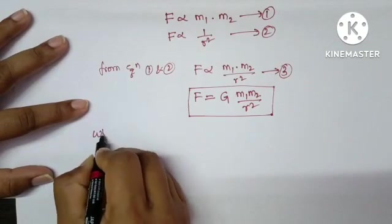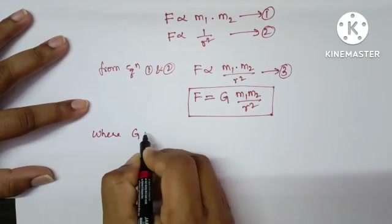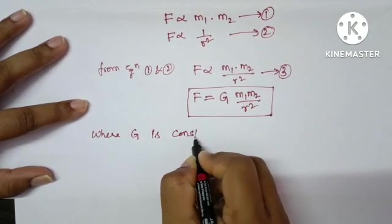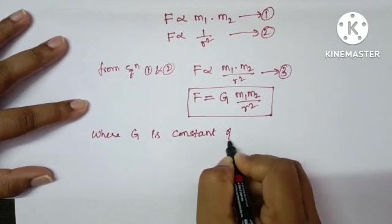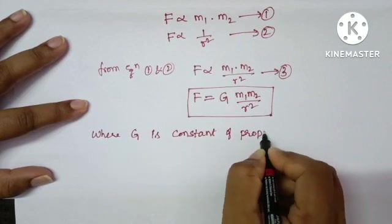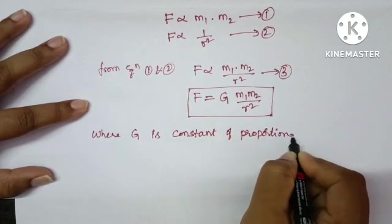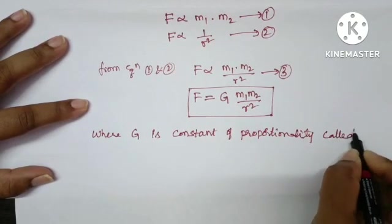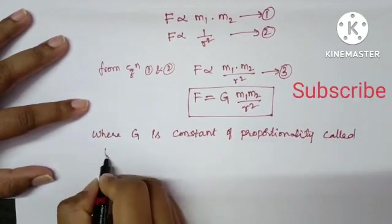Here, where G is the constant of proportionality, which is called universal gravitational constant.